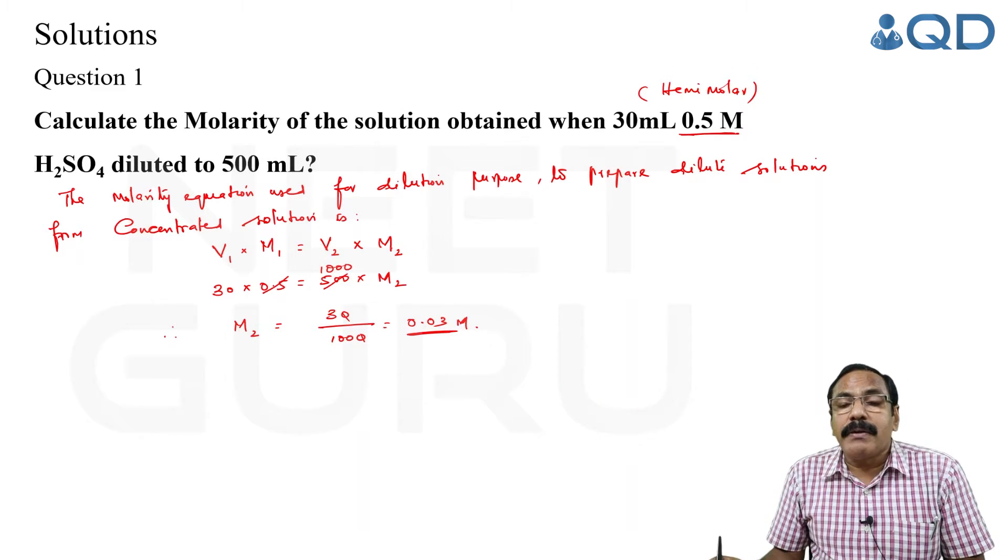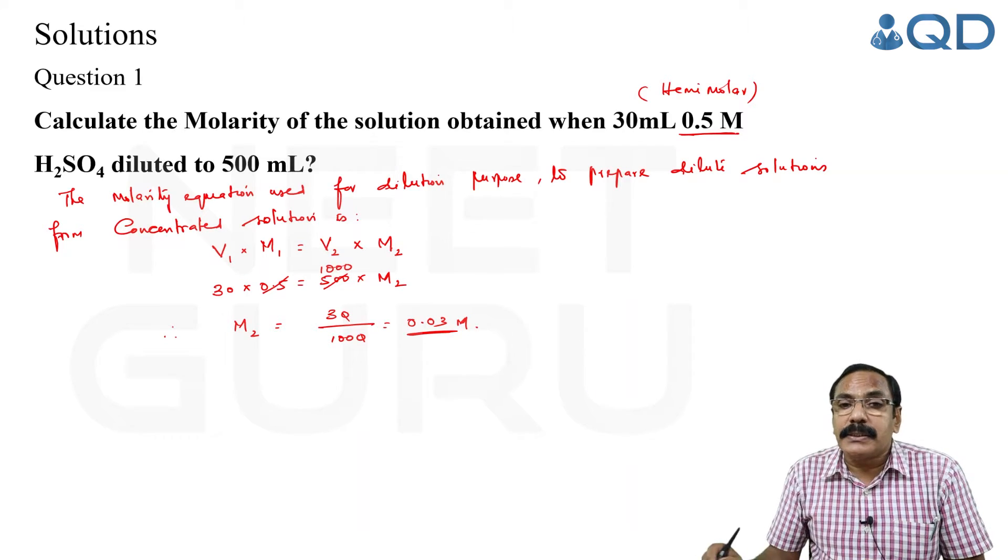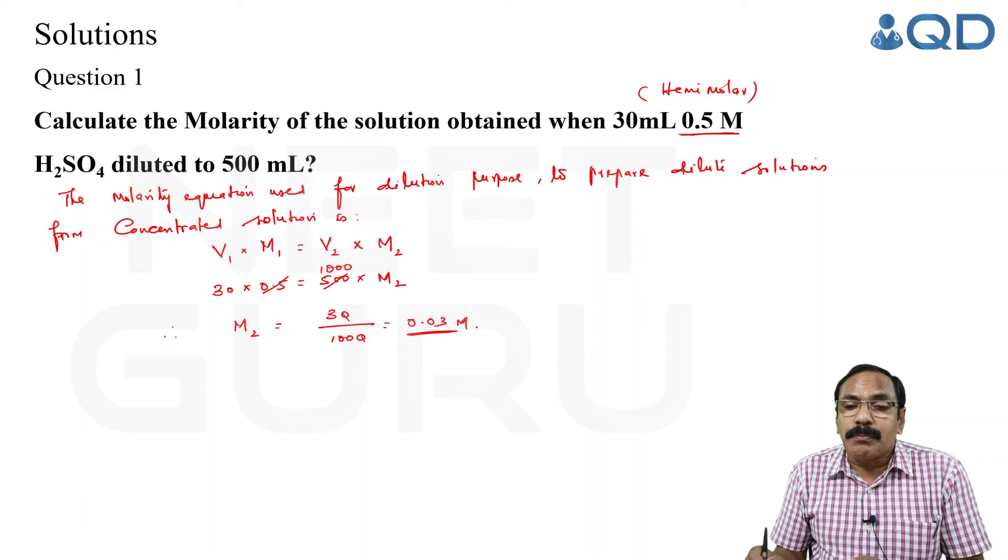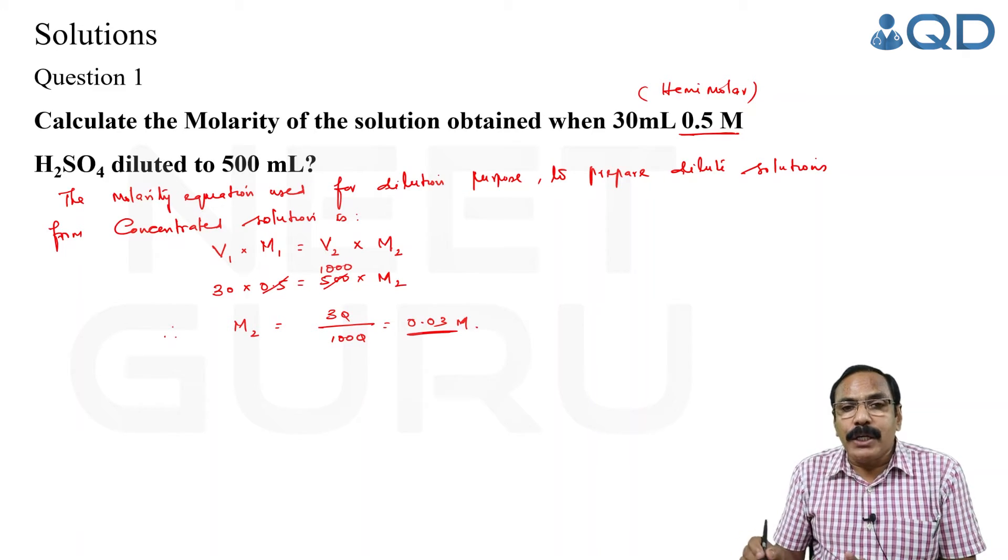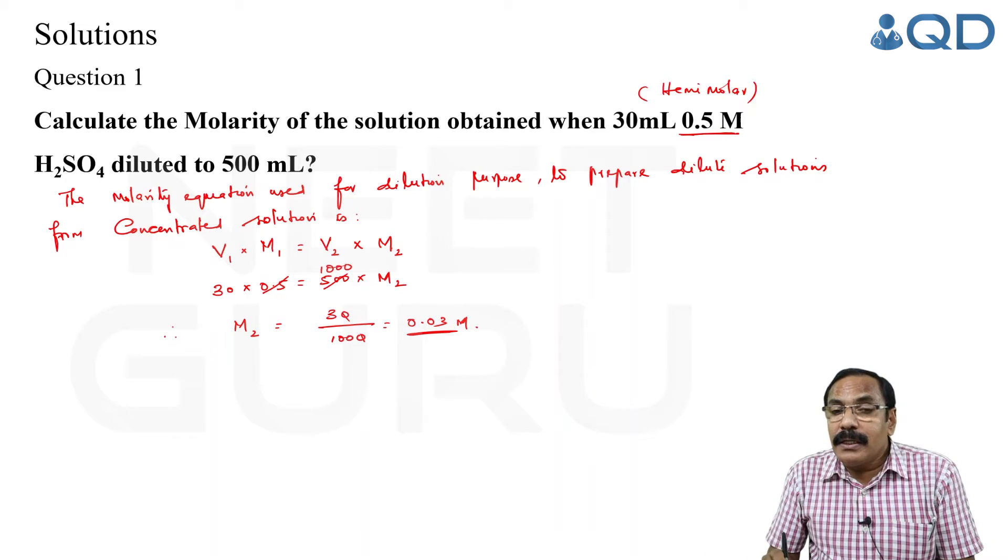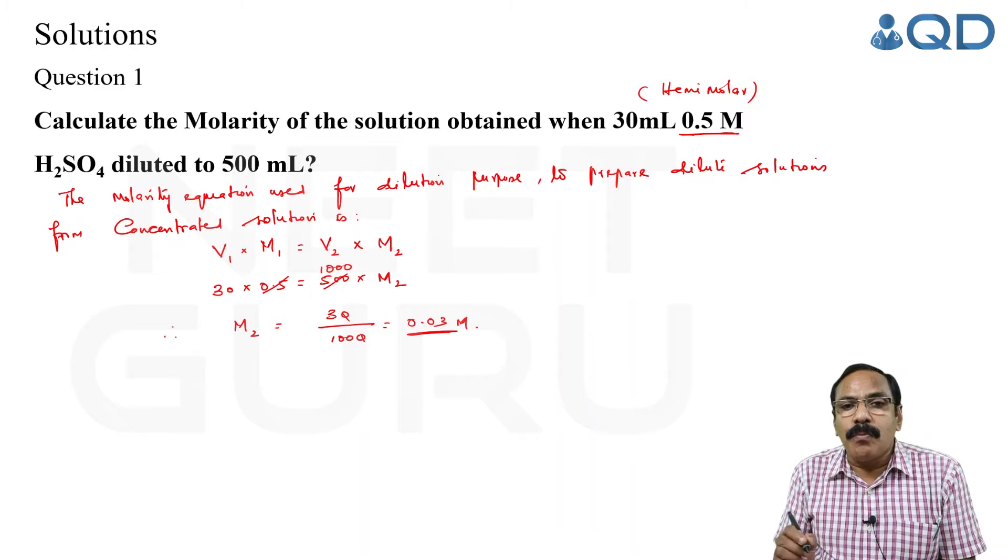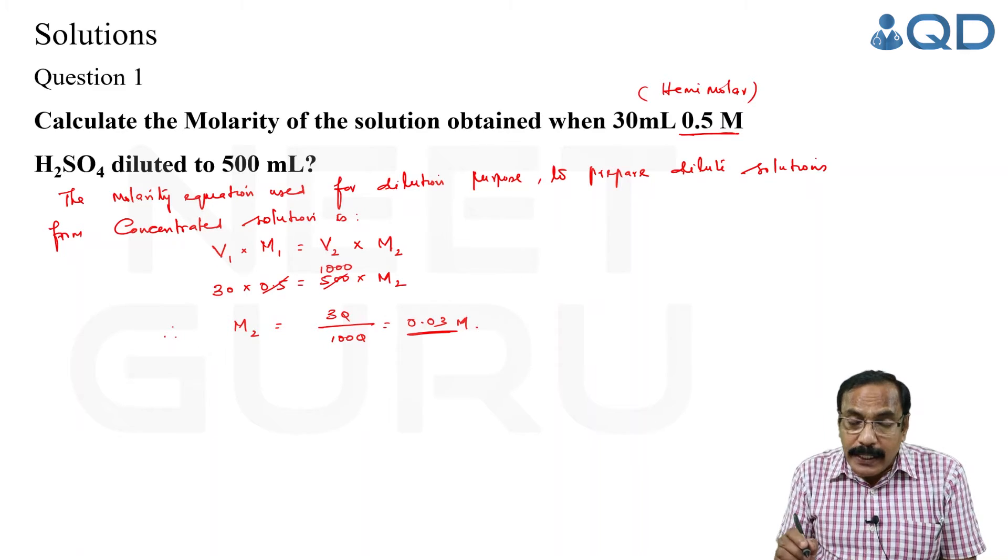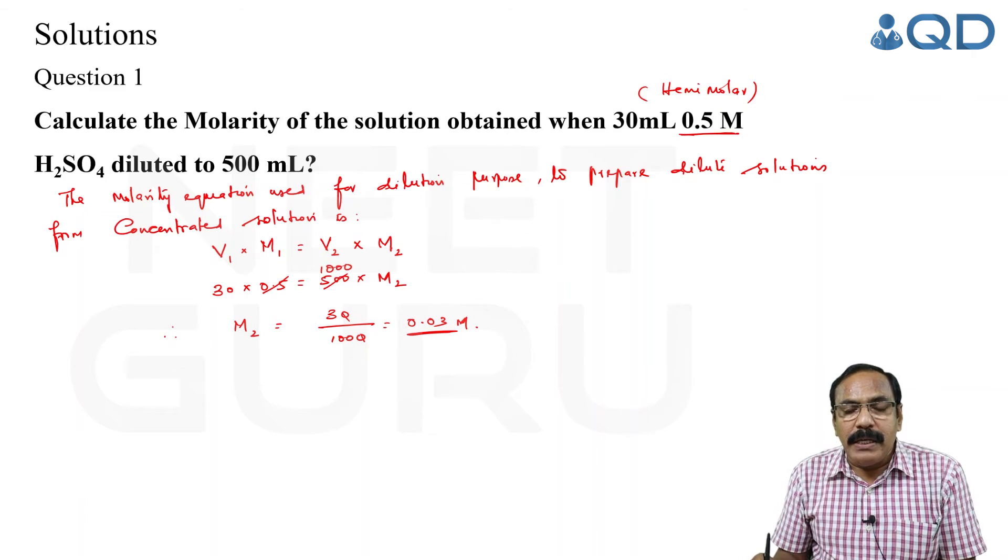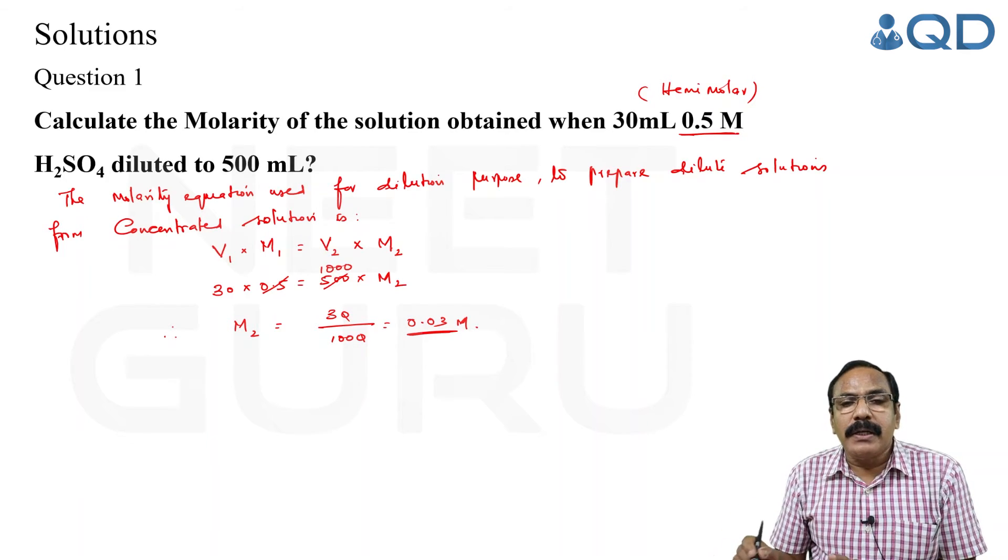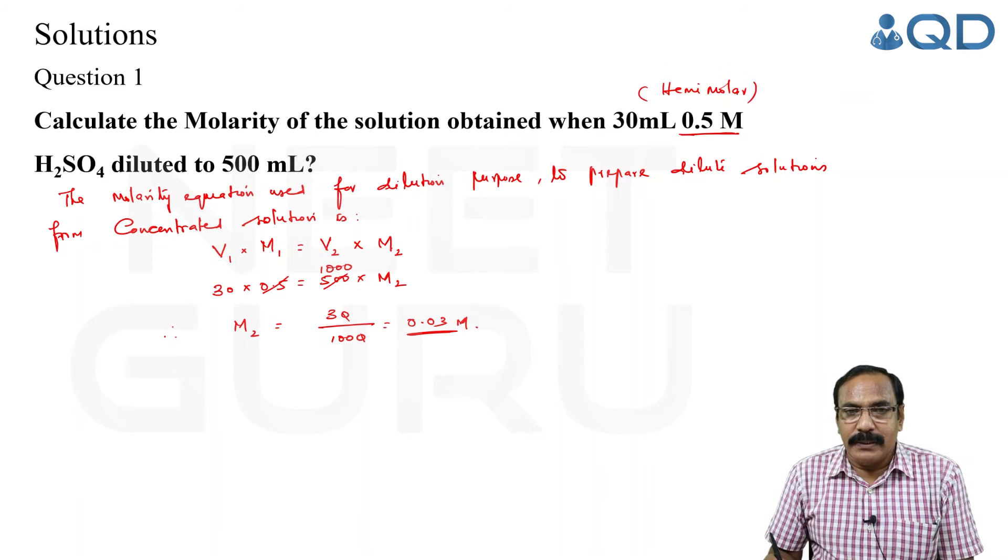Never apply V₁M₁ = V₂M₂ for solving the volume of reactants involved. Suppose you have reactant A and reactant B combined to form a product. The number of moles and volume are related as: (volume of A × molarity of A) / (number of moles of A) = (volume of B × molarity of B) / (number of moles of B). Then only it will be correct.